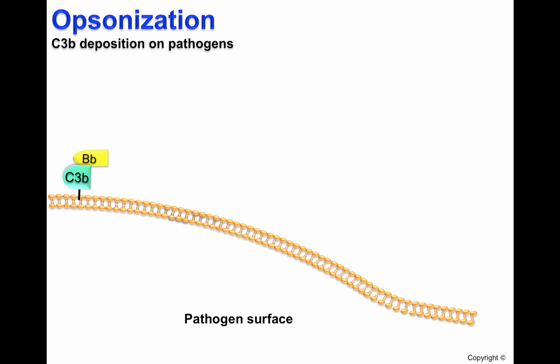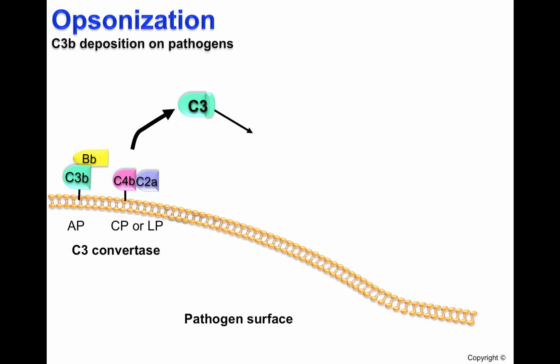C3B deposition on the surface of pathogens occurs when the C3 convertase of the alternative pathway C3B-BB, or the C3 convertase of the classical and lectin pathway C4B-C2A, cleaves C3 in order to generate C3A, which is an important chemoattractant, and C3B. If C3B is close enough to the surface of pathogens, it will covalently bind to its surface through its thioester bond. The thioester bond is shown here as a black line that links C3B to the surface of pathogens. This is what we call C3B deposition.